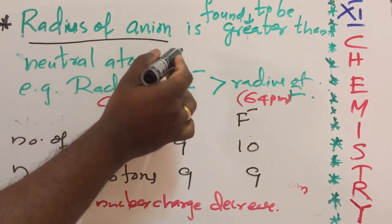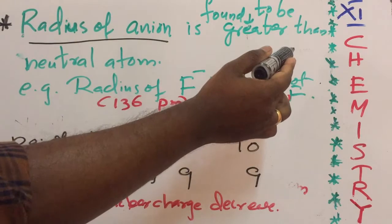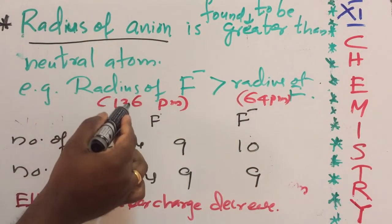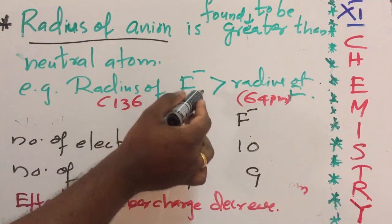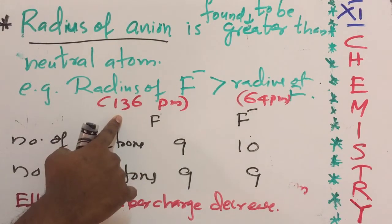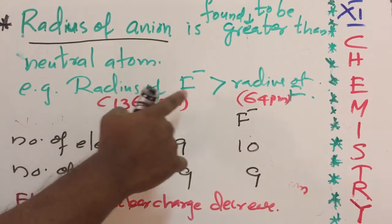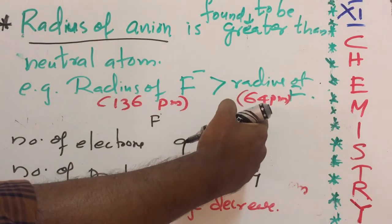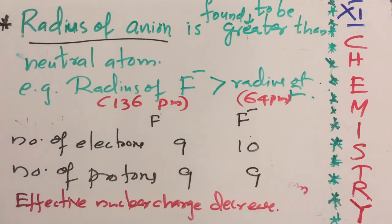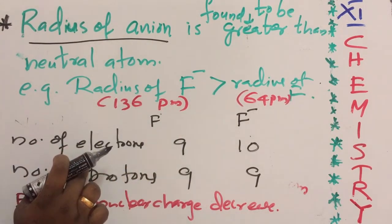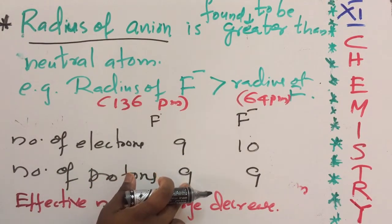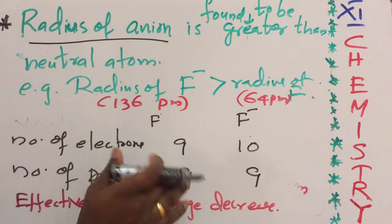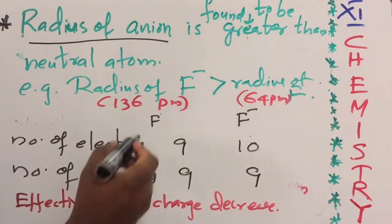The radius of an anion is found to be greater than that of the neutral atom. For example, the radius of the fluoride ion F- is 136 picometers, which is greater than the radius of neutral fluorine, which is only 64 picometers. Fluorine has 9 electrons and 9 protons, since it is neutral — its atomic number is 9.